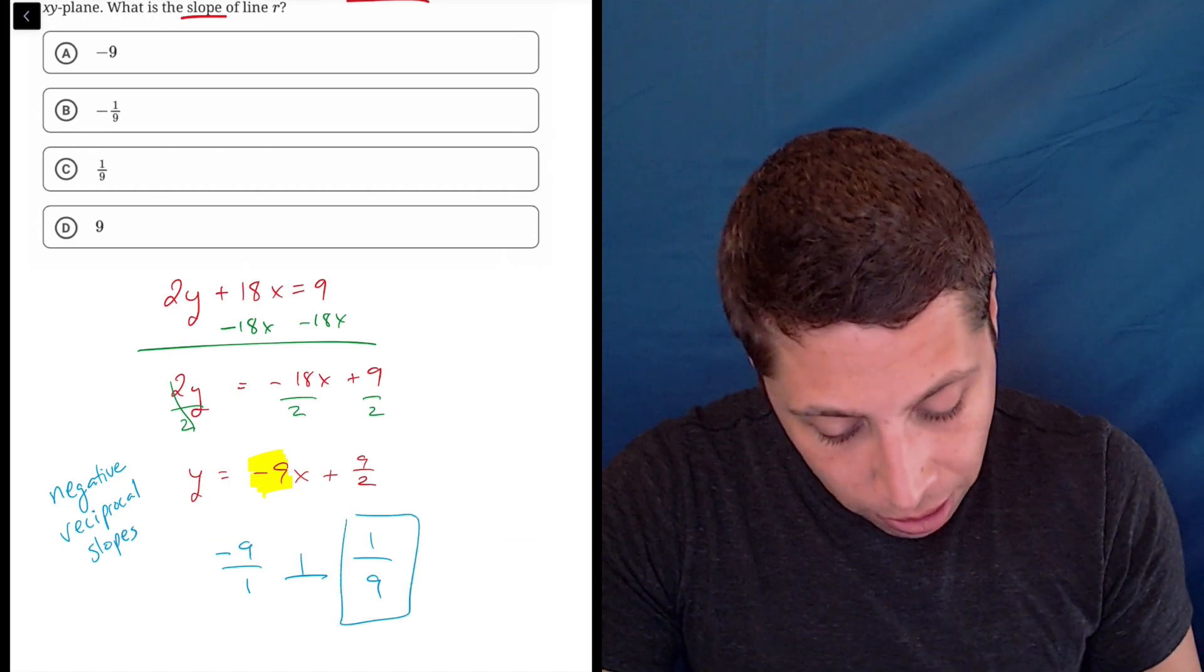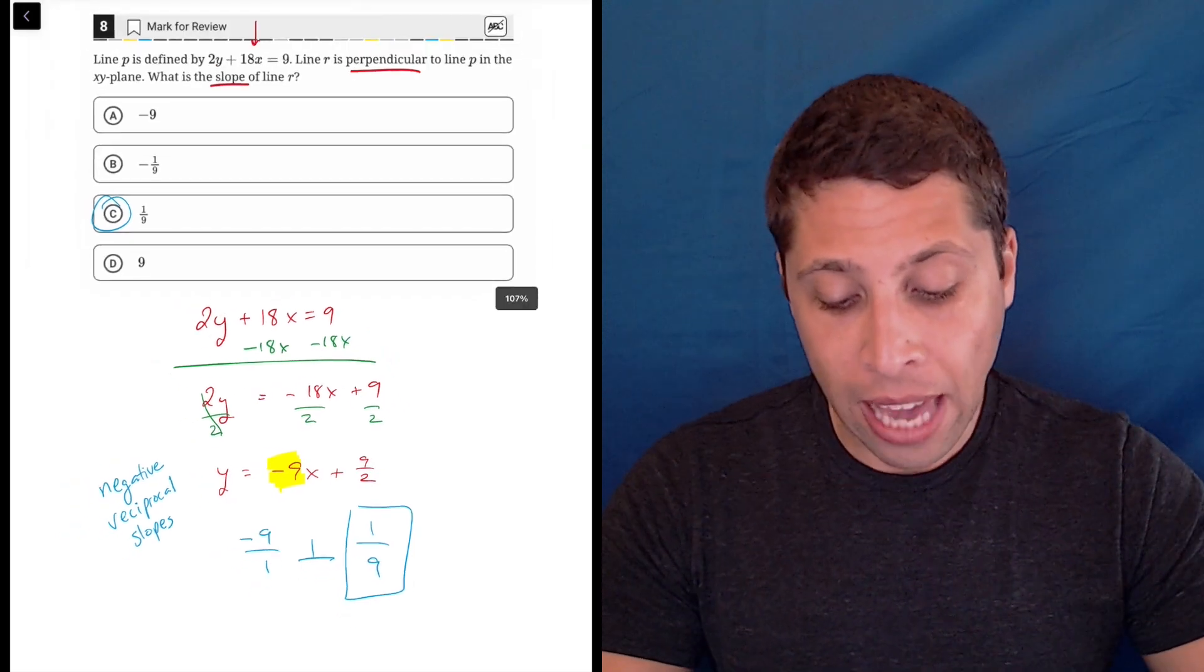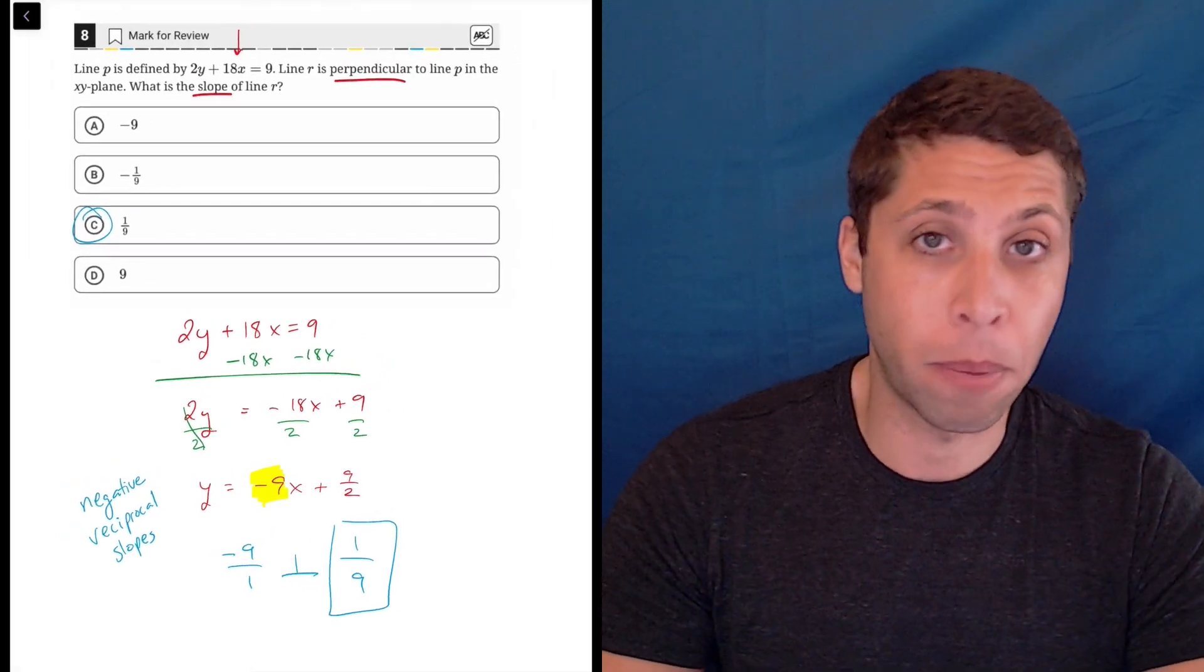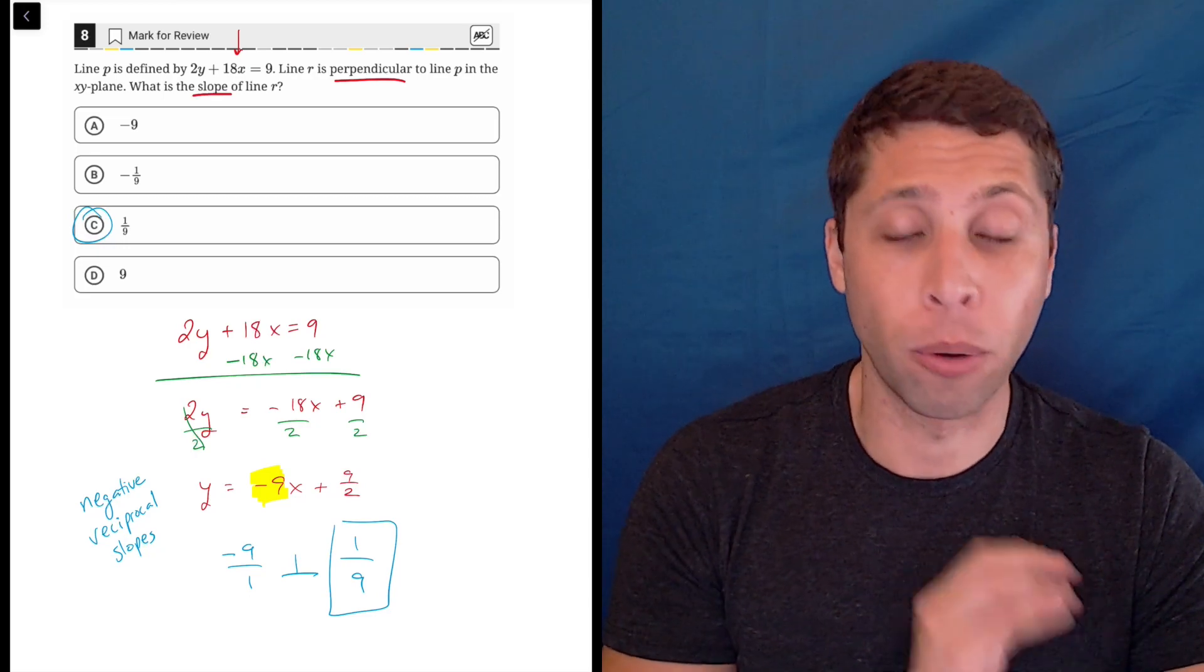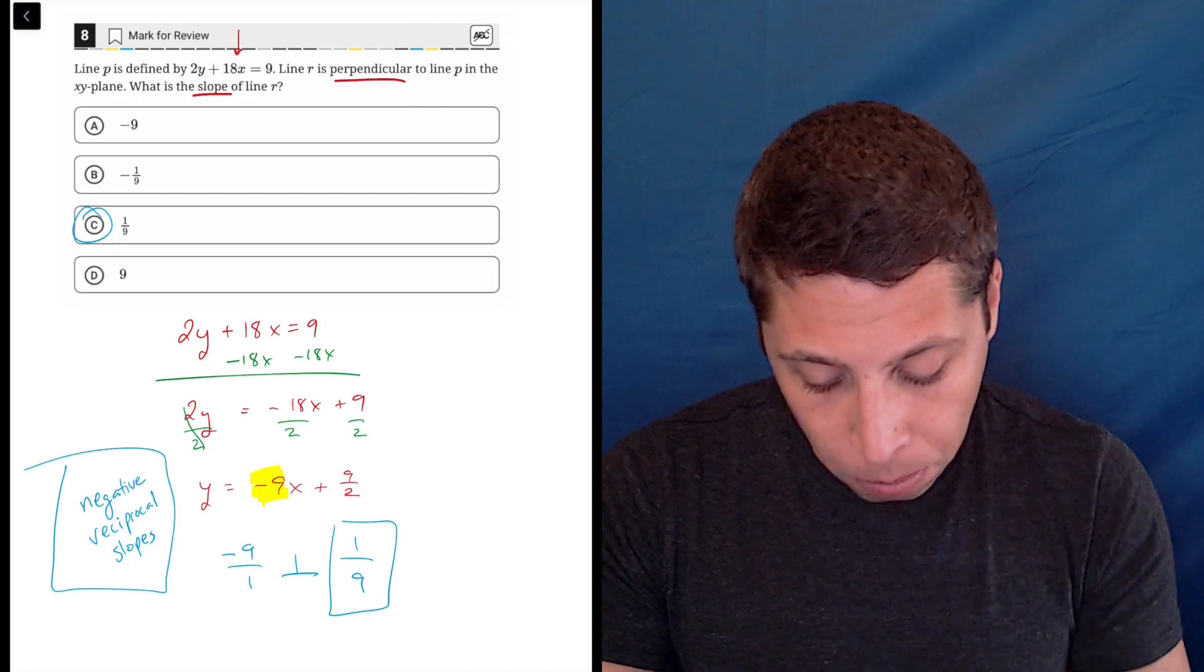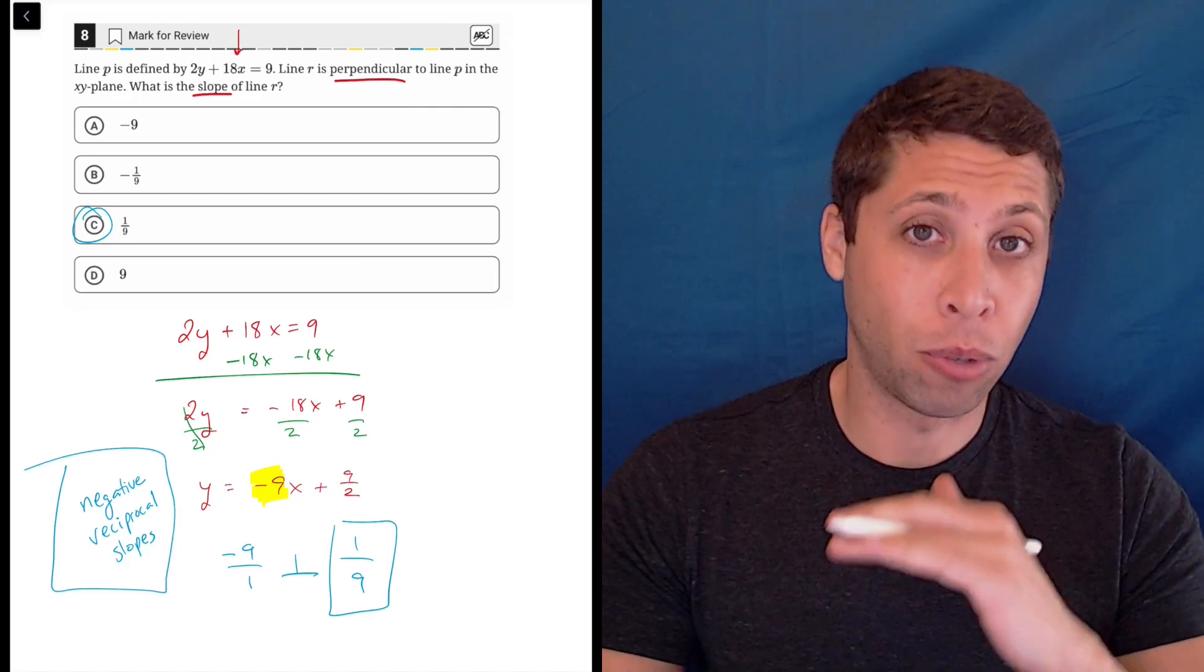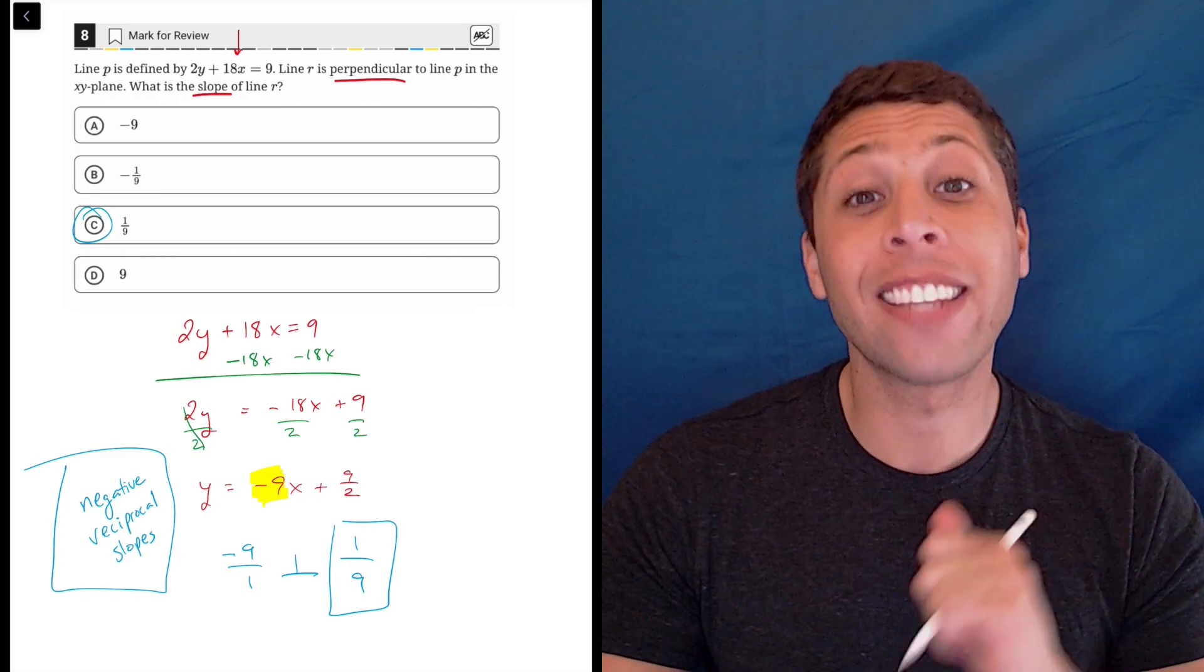So the answer is 1 ninth, that is choice C and that is it, there's nothing else we need to do. If they gave us full equations then we would just compare the slopes; the y intercepts do not matter for perpendicular lines. So ignore the b part, just focus on the slope and remember this rule: perpendicular slopes are negative reciprocals. You need to memorize that, that is not given to you on the test and they like to ask about it.